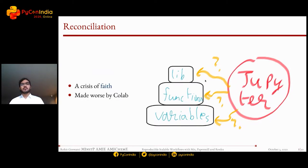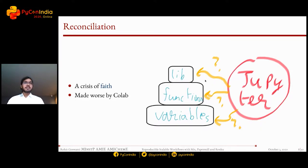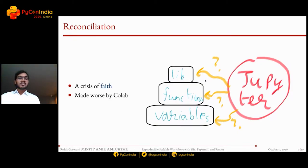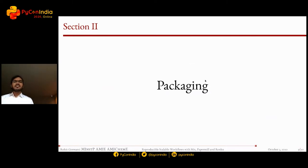Where does the Jupyter ecosystem really fit in? What is it meant to replace? Are we supposed to replace our libraries with Jupyter notebooks, or replace functions with notebooks? And Colab makes things worse because it unfortunately does not support a lot of standard Jupyter tools, which we'll discuss in this talk.